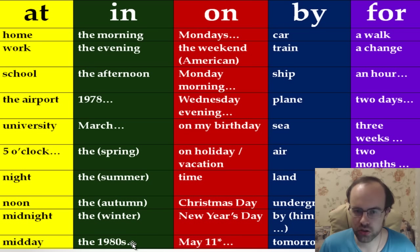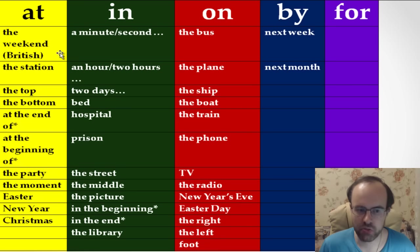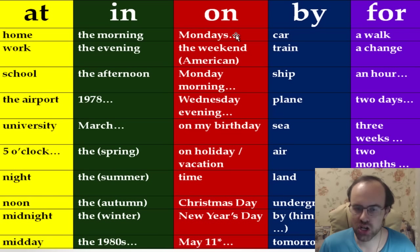Now 'on'. We use 'on' with days of the week: on Mondays, on Tuesdays, on Wednesdays, on Thursdays, on Fridays, on Saturdays, on Sundays. We say on the weekend in American English, but at the weekend in British English — that's the main difference.